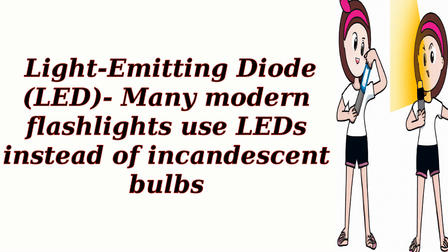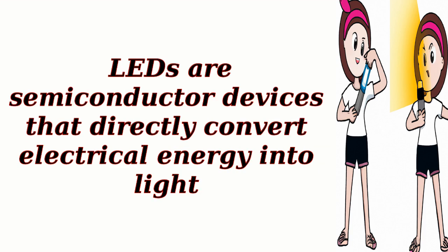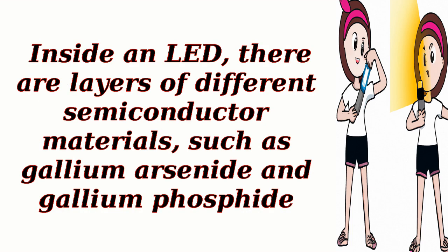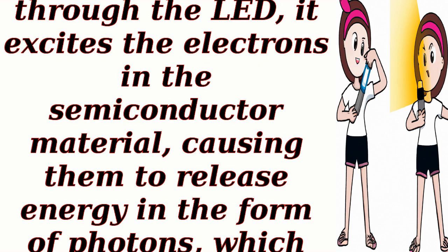Light-emitting diode, LED: many modern flashlights use LEDs instead of incandescent bulbs. LEDs are semiconductor devices that directly convert electrical energy into light. Inside an LED, there are layers of different semiconductor materials, such as gallium arsenide and gallium phosphide. When an electric current flows through the LED, it excites the electrons in the semiconductor material, causing them to release energy in the form of photons, which are the particles of light.